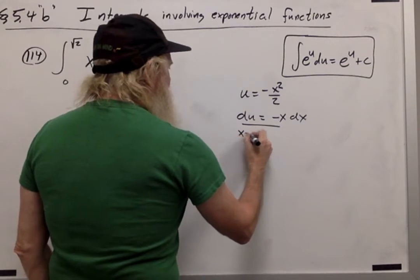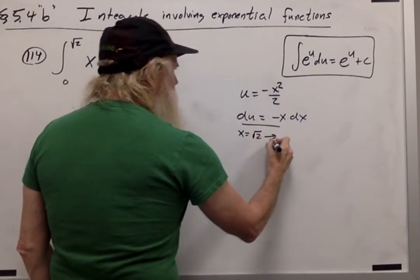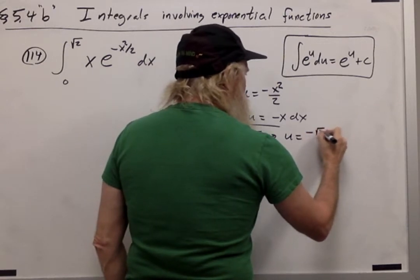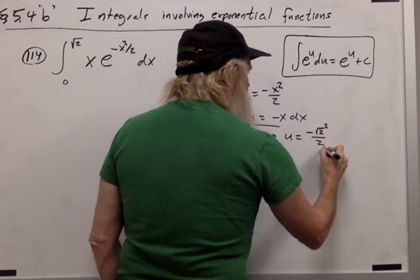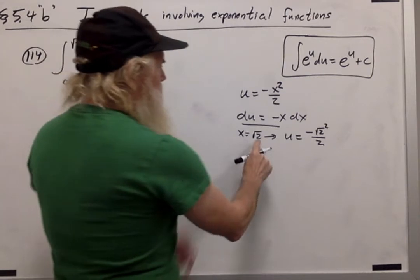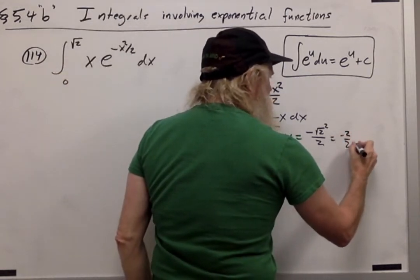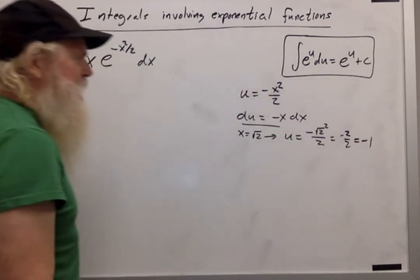For the top bound, if x is equal to the square root of 2, then u is equal to negative the square root of 2 squared over 2. So I'm plugging in x equals the square root of 2 right here. So this is negative 2 over 2, which is negative 1.